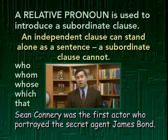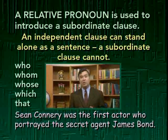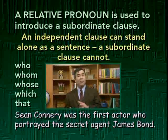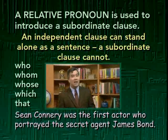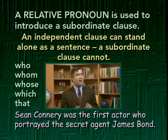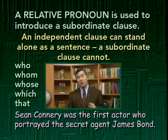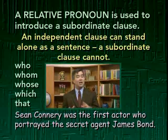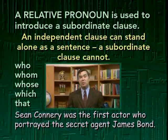Let's look at examples. 'Sean Connery was the first actor who portrayed the secret agent James Bond.' Here, the relative pronoun who introduces the subordinate clause 'who portrayed the secret agent James Bond.' This subordinate clause can't stand alone — it exists to give more information about what kind of actor Sean Connery was. The entire subordinate clause acts as a modifier, much like an adjective, giving more information about the noun actor in the independent clause.